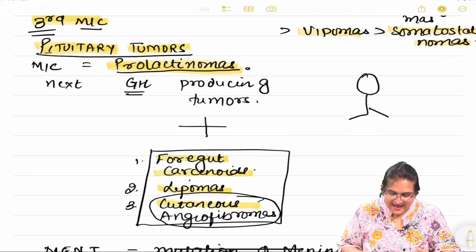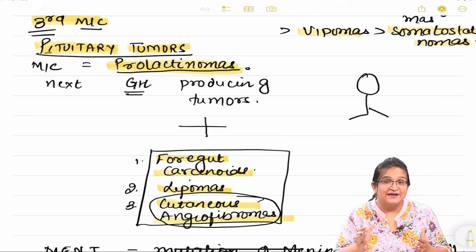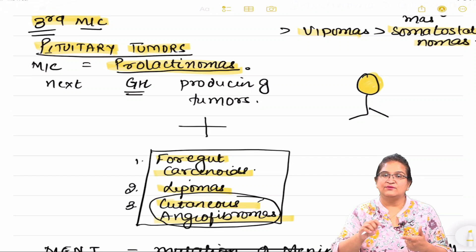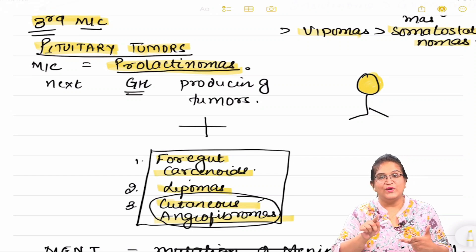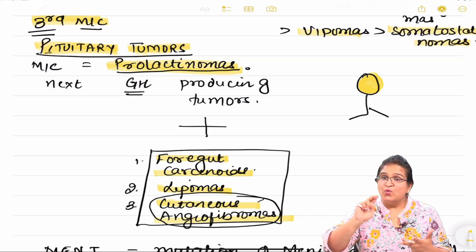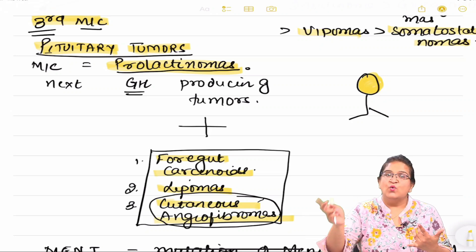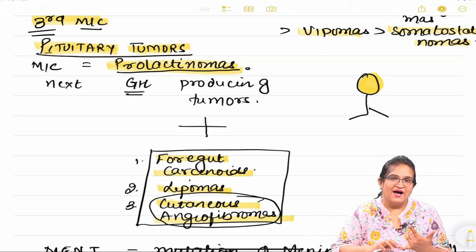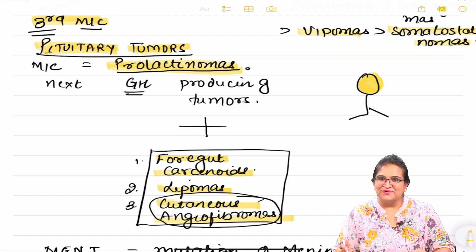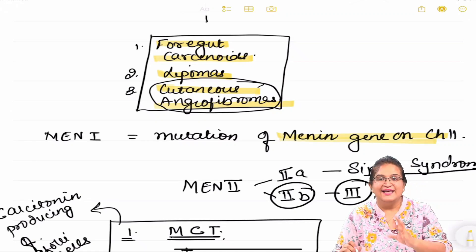With all these features, we may also find gut carcinoids, lipomas, and cutaneous angiofibromas in MEN 1. For example, if Ramu has cutaneous angiofibromas with hyperparathyroidism, a pancreatic polypeptide tumor, and a prolactinoma, then it is going to be MEN 1 Wermer syndrome. MEN 1 occurs due to mutation of the MEN1 gene.